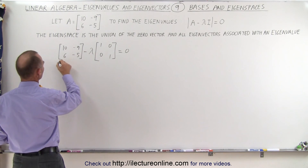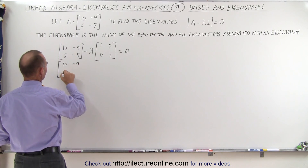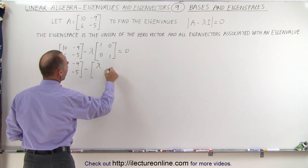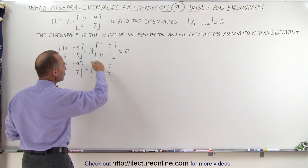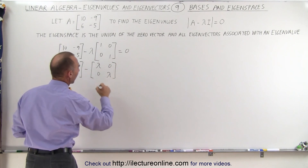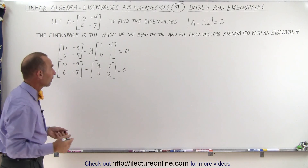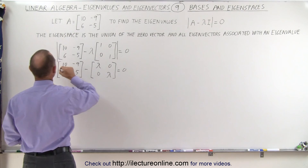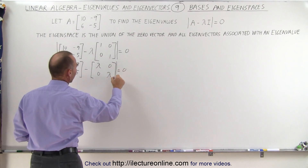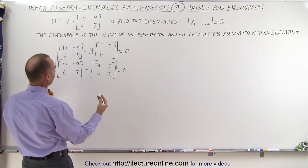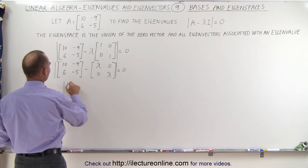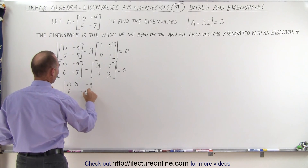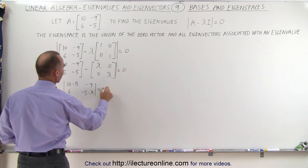That becomes equal to the matrix 10, -9, 6, -5, and then we subtract from that a matrix that has the unknown eigenvalue on the diagonal, set that equal to zero. What we're going to do is take the determinant of that and set it equal to zero. So essentially what we're trying to do is find the determinant of (10 − λ), −9, 6, and (−5 − λ), and set that equal to zero.